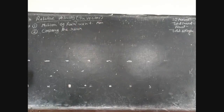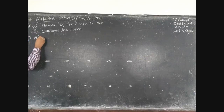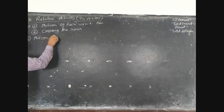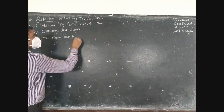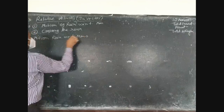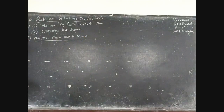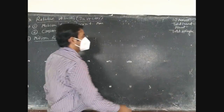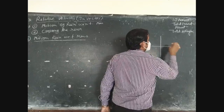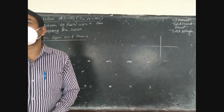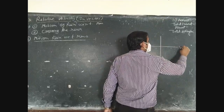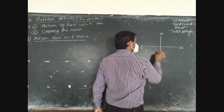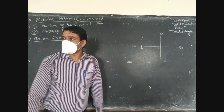Now first, in this topic, you need to understand about the direction. If you are taking this as east and west, so this will be north and south. We are very clear that the velocity of rain is always falling vertically down.